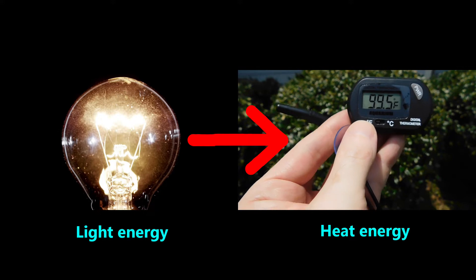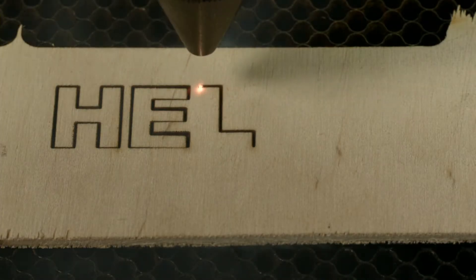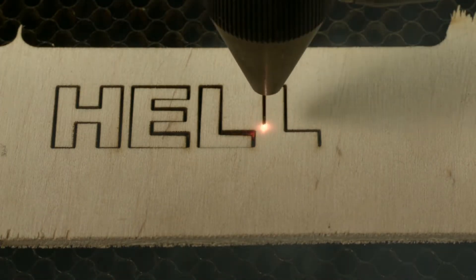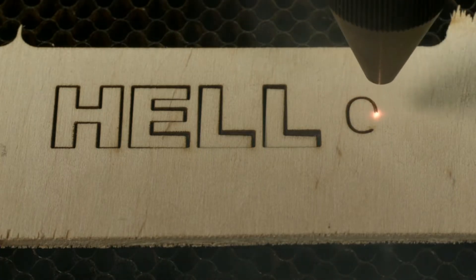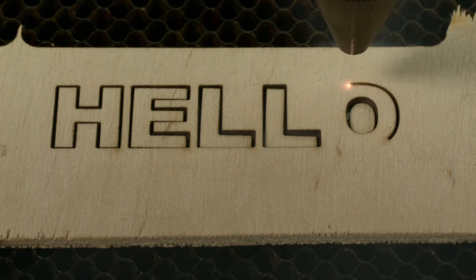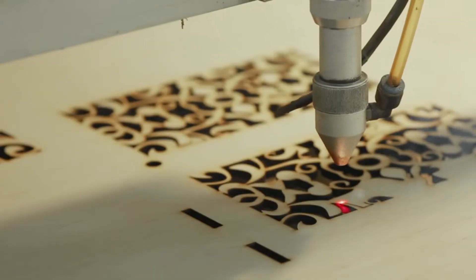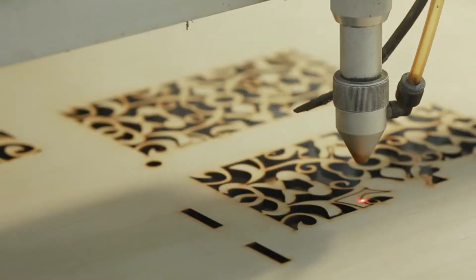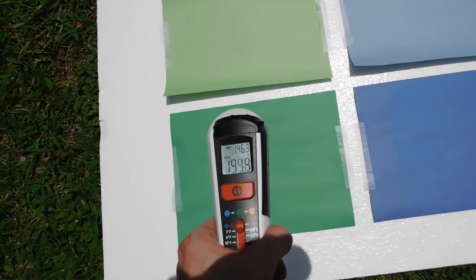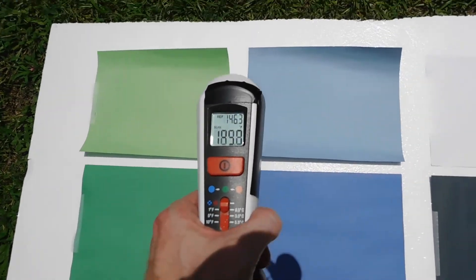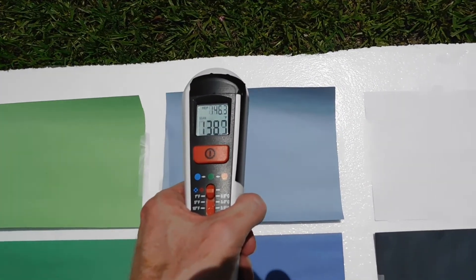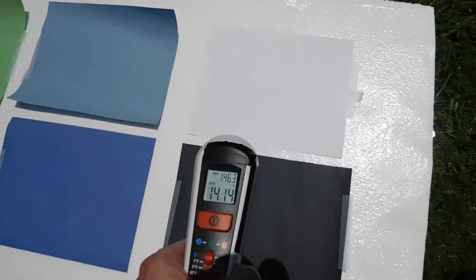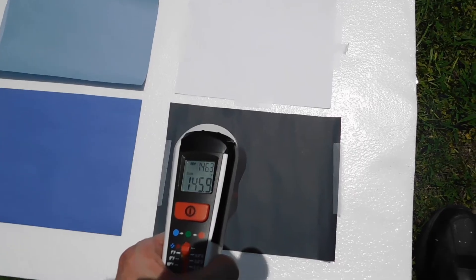We'll start by looking at light energy being converted to heat energy. When this wood absorbs light energy, the wood converts the light energy into heat energy. The wood gets so hot that it instantly vaporizes into smoke and leaves a space where the wood was, creating a deep cut. Lasers can cut materials because those materials convert the laser's light energy into heat energy. When ink, paint, or dyes absorb light energy, they convert that light energy into heat energy. Darker papers absorb a lot of light compared with lighter colors, so they are converting more light energy into heat energy, which explains why darker colors are hotter than lighter colors.